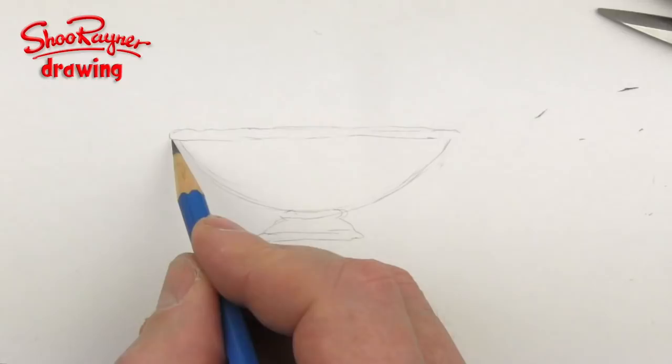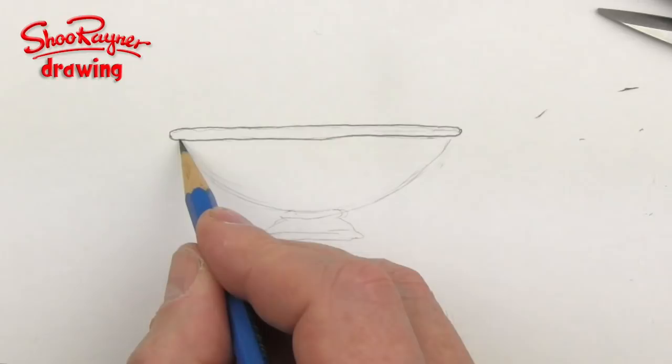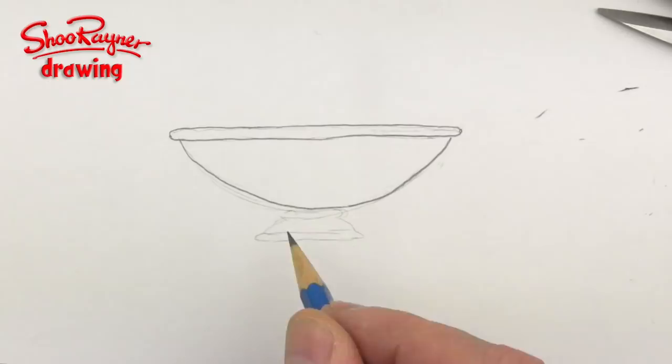So I'm using an HB pencil and now I can probably draw this a bit more detailed. I'm suddenly becoming very aware that there's wood grain underneath this picture and the grain is dragging the sharp point of this pencil in directions I don't want it to go, but never mind that.